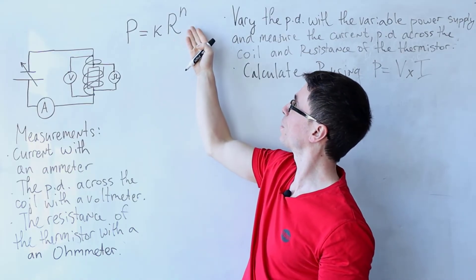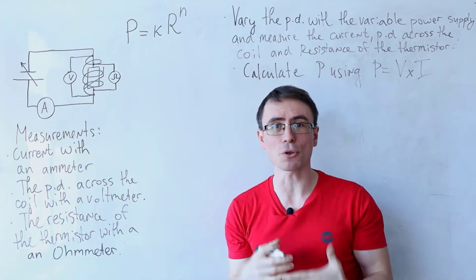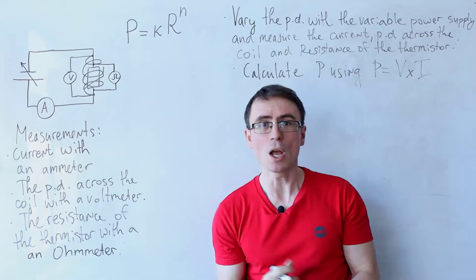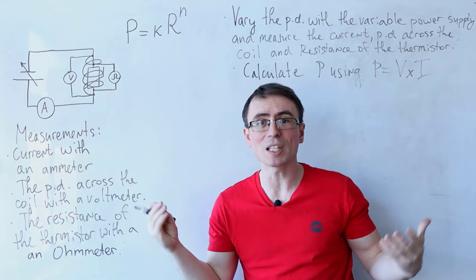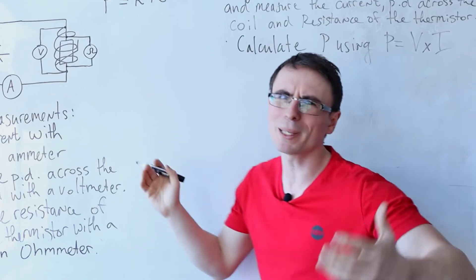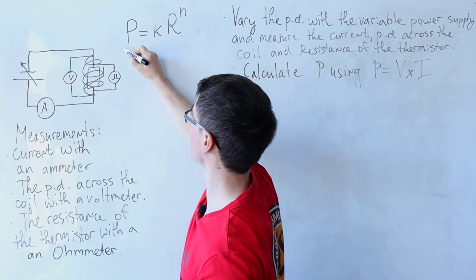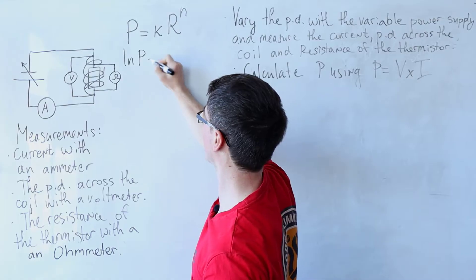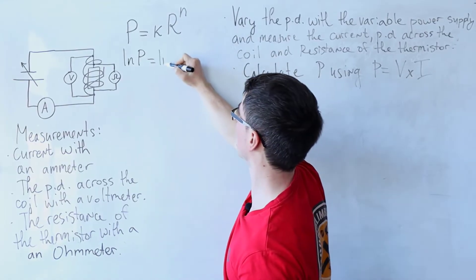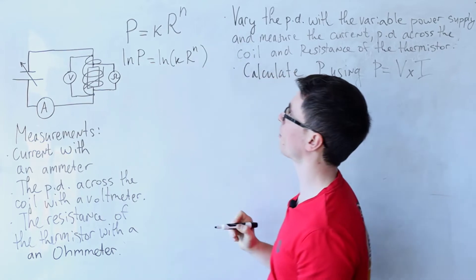Anytime we're looking for some variables which are within a power, what we need to do is use logs. We can use any base that we like, but I'm going to choose to use the natural logarithm because I like the number e. So I'm going to take the ln of both sides, i.e., ln of P will be equal to ln of k multiplied by R raised to the power of n.